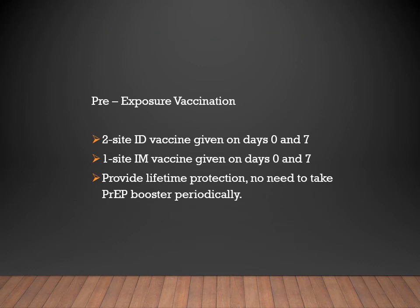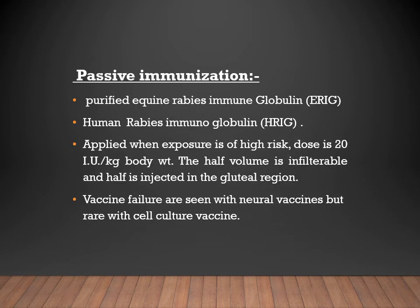For pre-exposure vaccination — for veterinary staff and others at risk of infection — the intradermal vaccine is given at two sites on days 0 and 7. For intramuscular, one site on days 0 and 7. This provides lifetime protection, with periodic boosters required to maintain immunity.